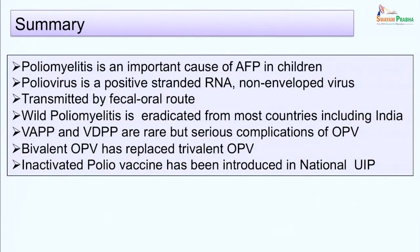To summarize: poliomyelitis is an important cause of acute flaccid paralysis in children. Poliovirus is a positive-stranded RNA virus which is non-enveloped, transmitted by the fecal-oral route. Wild poliomyelitis is eradicated from most countries including India. However, most countries still continue to have vaccine-associated paralytic poliomyelitis as well as vaccine-derived paralytic poliomyelitis, which are rare but serious complications associated with oral polio vaccine. Bivalent oral polio vaccine has replaced trivalent OPV, and inactivated polio vaccine has been introduced into the national immunization protocol. Thank you.